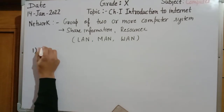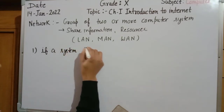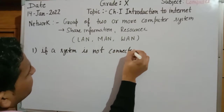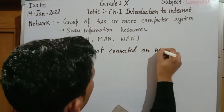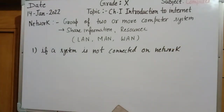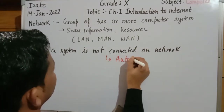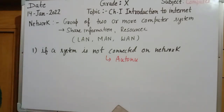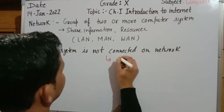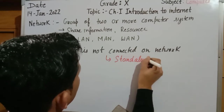If a system is not connected on a network, what is it called? If a system is not connected on a network, it is called an autonomous system, also known as a standalone system or standalone computer system.